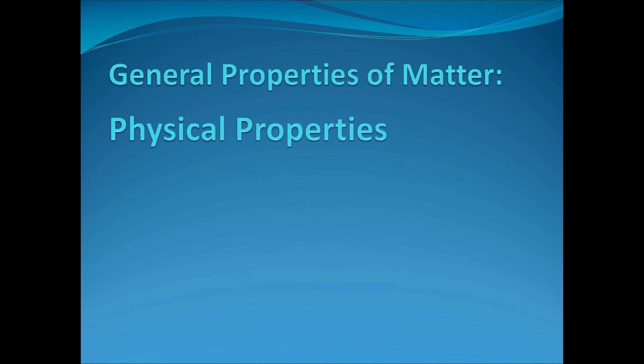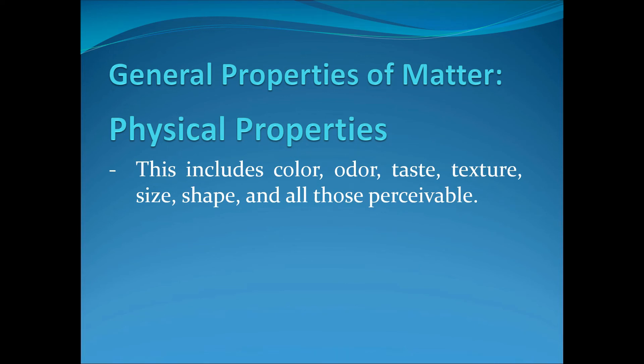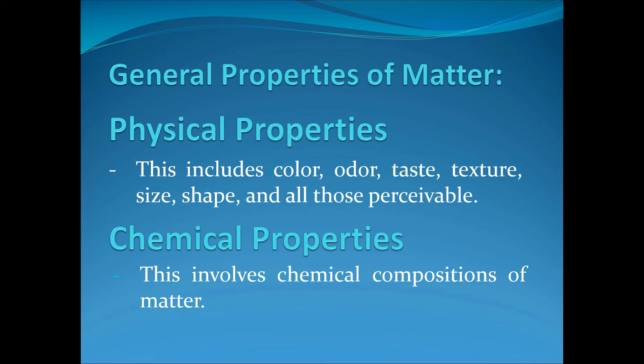The first one is the physical properties of matter. These properties are the inherent characteristics of a substance which may be determined even without altering the composition of the substance. Sometimes, they are associated with its physical existence. Common examples of physical properties are the color, odor, taste, texture, and some other properties or even the state of matter. For example, water can be a solid, liquid, or gas. While the chemical properties are those characteristics associated with the changes in the composition of a substance. It involves the chemical compositions of a substance or matter.